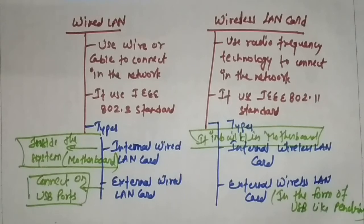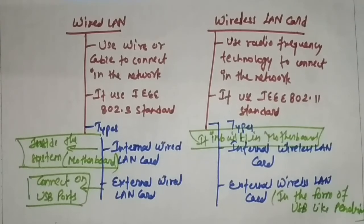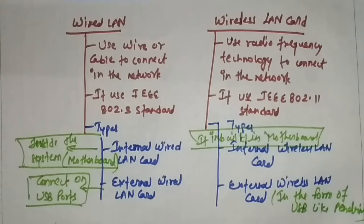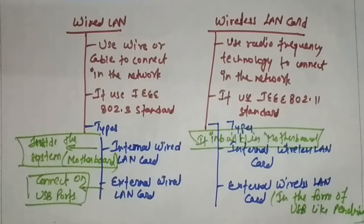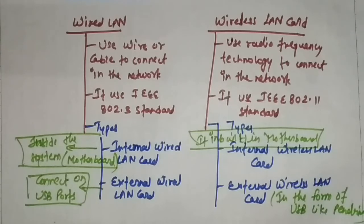The internal wireless LAN card looks like the Wi-Fi of a laptop, which is inbuilt in the motherboard. The external wireless LAN card comes in USB form, like a pen drive.